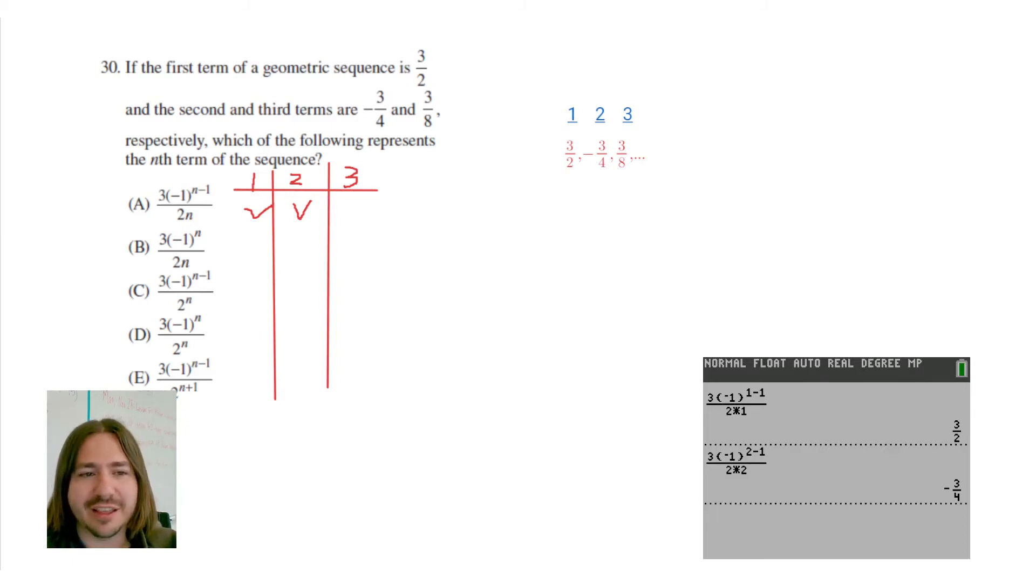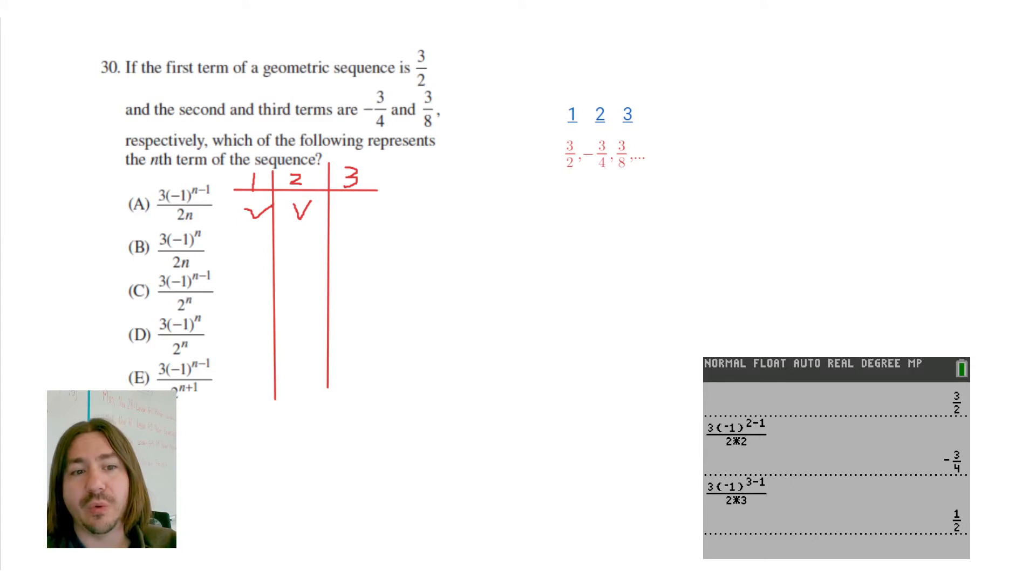So let's try the next one. We're going to substitute 3. And if we're lucky and the answer is choice A, we're going to get 3 eighths. But we do need to check all three because it's possible for two different sequences to have the same first couple of terms. So I'm going to substitute 3. And do we get 3 eighths? No, we get 1 half. So unfortunately, our answer cannot be A.